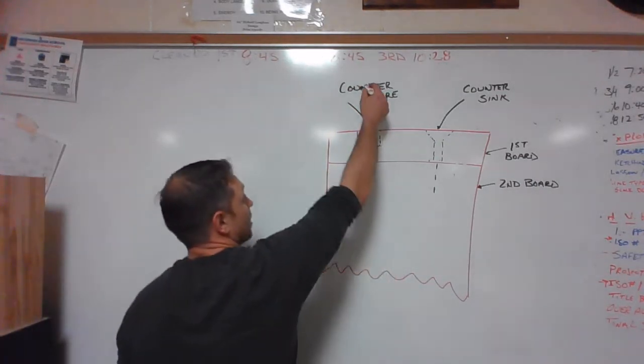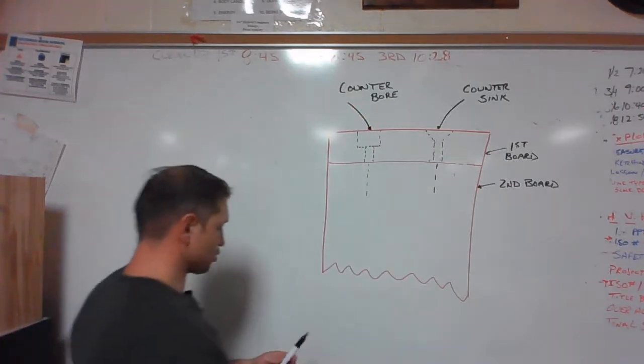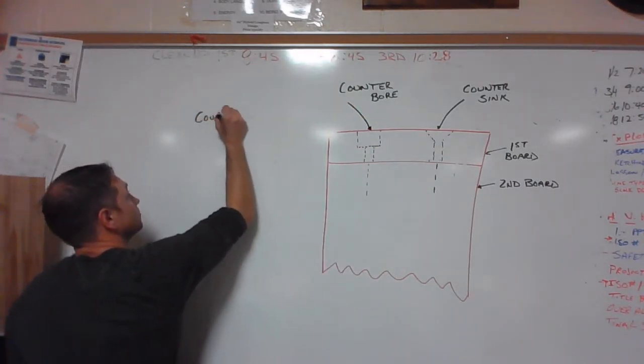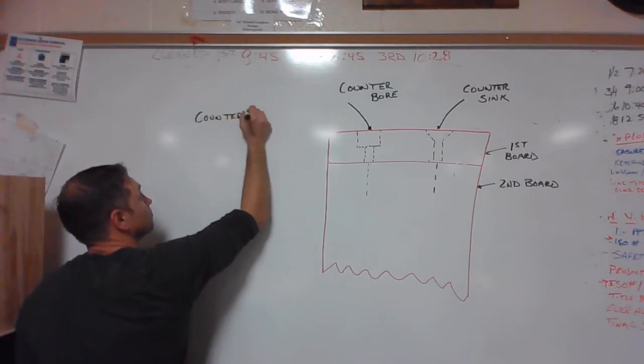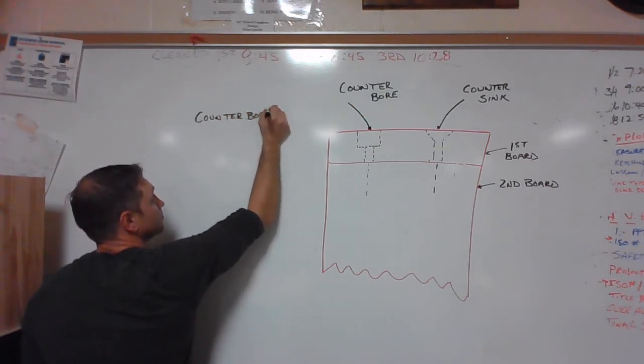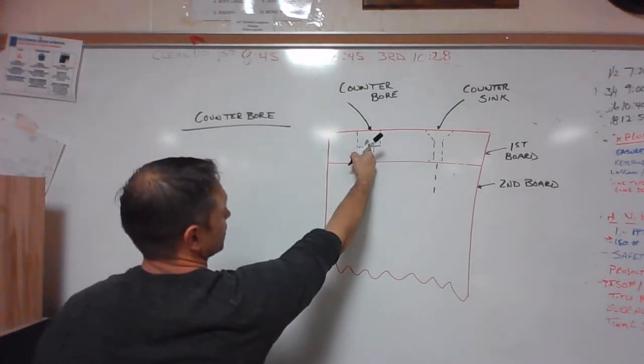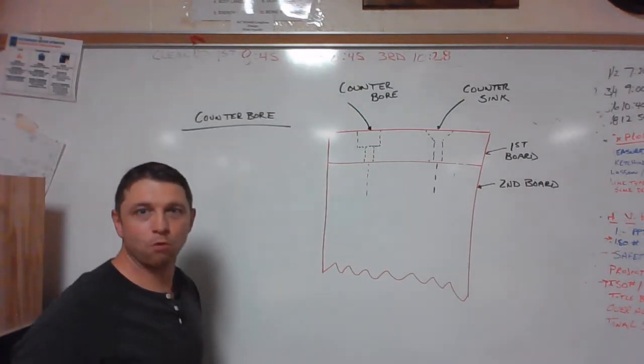All right, so the first hole drilled is our counter bore hole. The bit we are going to use to drill this is a three-eighth brad point bit.